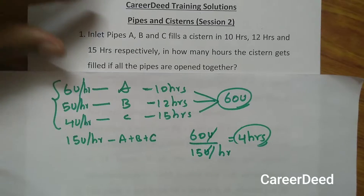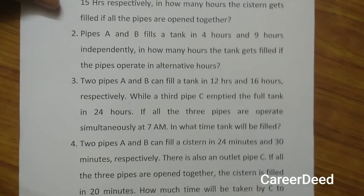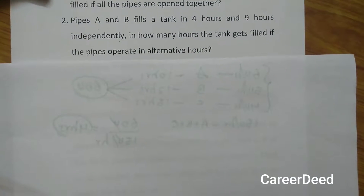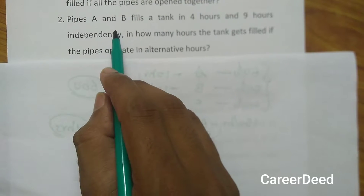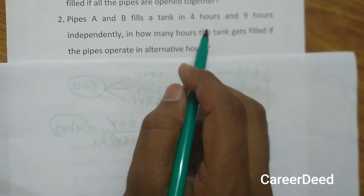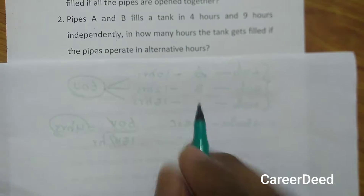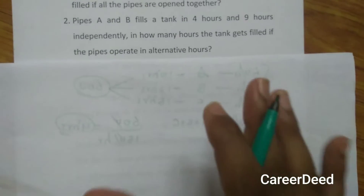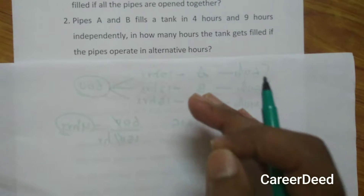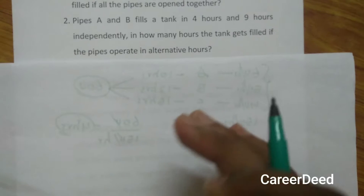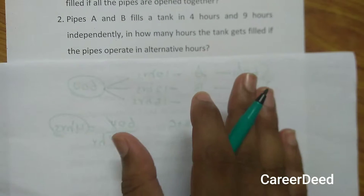Moving to question number 2. Pipe A and B fill a tank in 4 hours and 9 hours respectively. In how many hours does the tank get filled if the pipes operate in alternate hours? Alternate hours means the first hour A works, the second hour B works, the third hour A works, and the fourth hour B works. In this way, if A and B work alternately, in how many hours does the tank get filled?